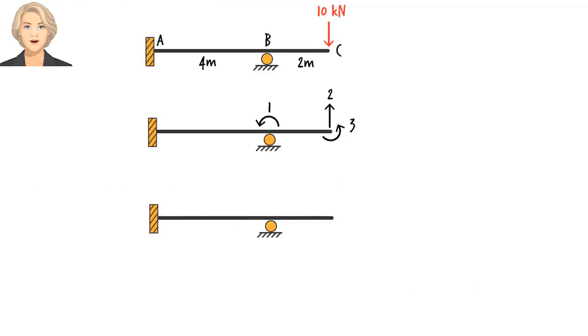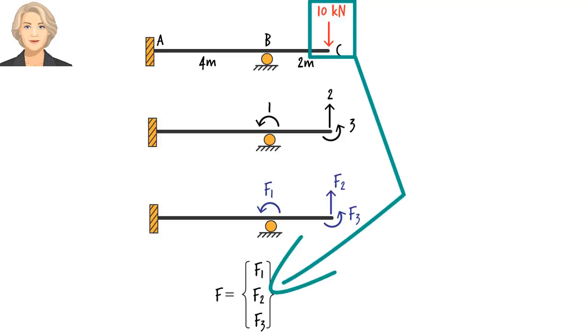We are also going to define three forces, one force along each defined direction. So we get F1, F2, and F3. View them as applied joint loads. Here, since the beam is subjected to a single concentrated load in direction 2, then only F2 has a non-zero value. It equals negative 10 kilonewtons. F1 and F3 are zero since there is no applied moment at the roller or at the free end of the beam. The system force vector, then, can be written like this.